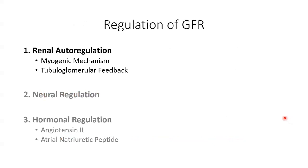Renal autoregulation is the kidneys regulating themselves. The kidneys regulate the flow of blood into the glomerulus to handle everyday normal fluctuations in systemic blood pressure — for example, when you stand up after lying down and your blood pressure drops for a couple of seconds, renal autoregulation accounts for that to maintain GFR. Within renal autoregulation there are two mechanisms: the myogenic mechanism, which relates to stretching and subsequent constriction of the afferent arteriole, and tubuloglomerular feedback, which is feedback obtained about the composition of the filtrate within the tubules.